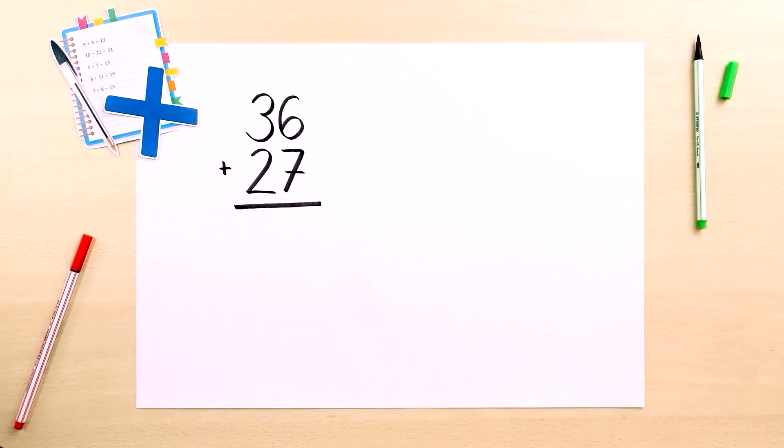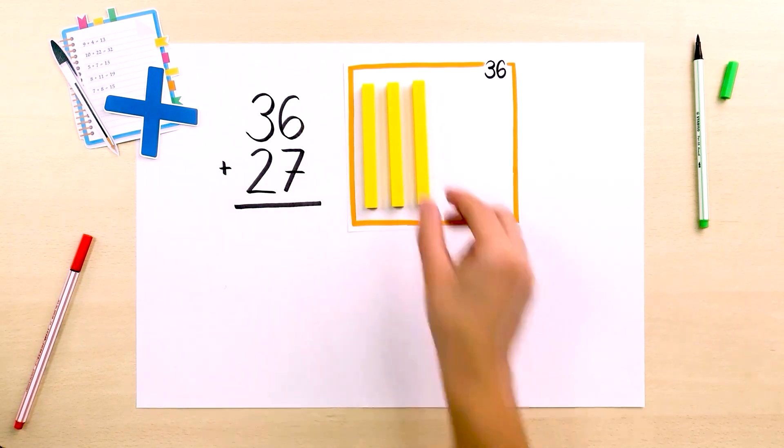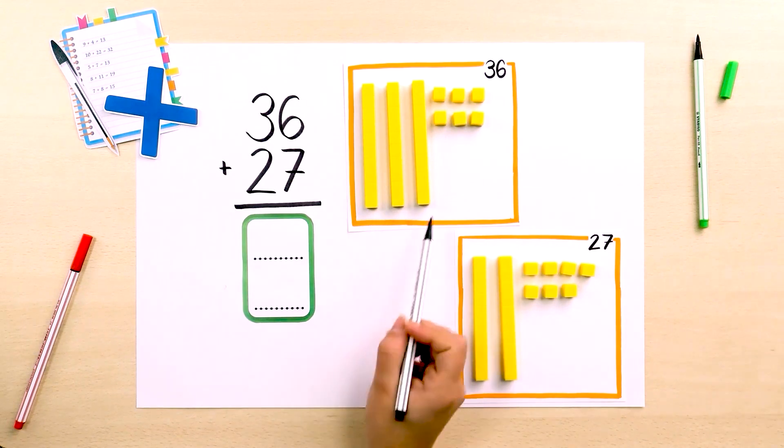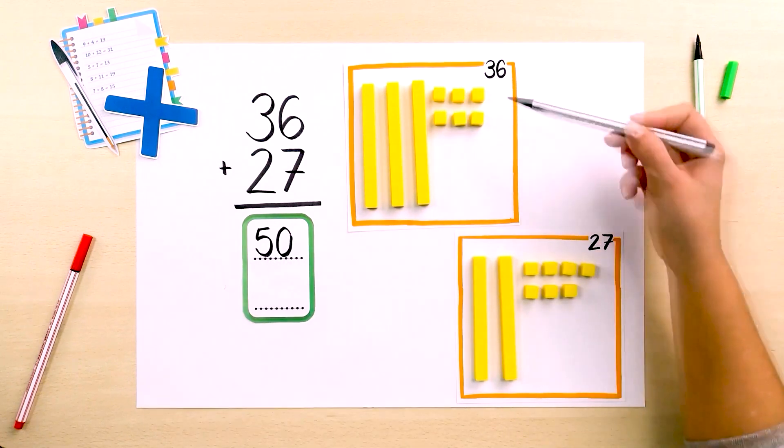So 36 is 3 bars and 6 cubes, and 27 is 2 bars and 7 cubes. In total, we know 3 tens and 2 tens makes 5 tens, in other words 50 cubes, and 6 plus 7 is 13.